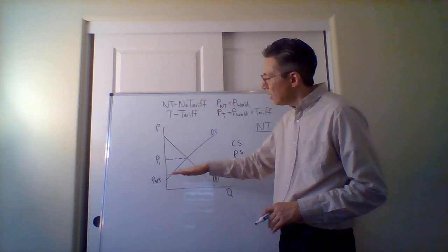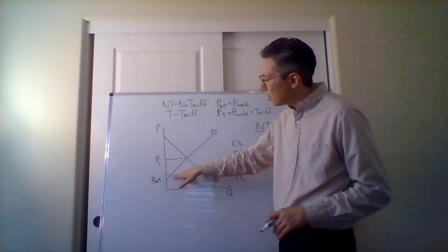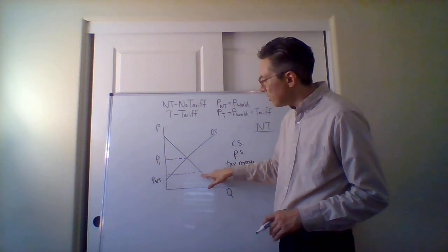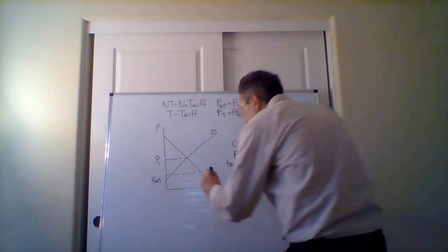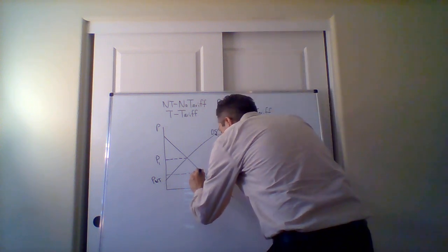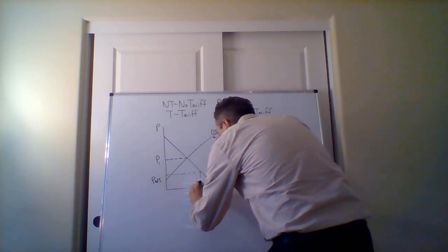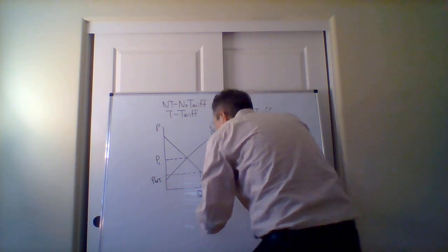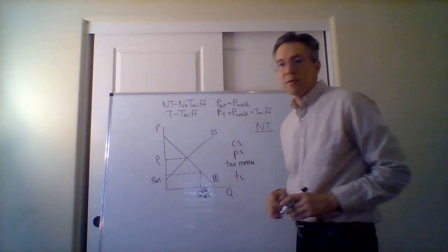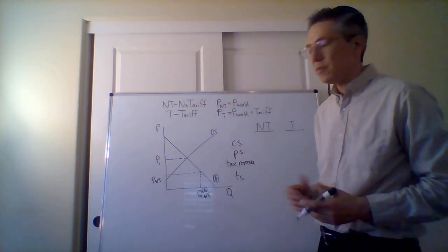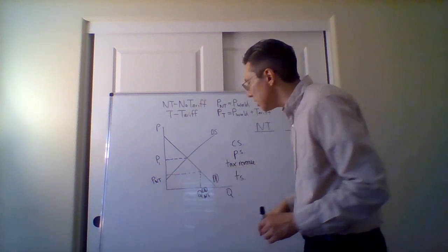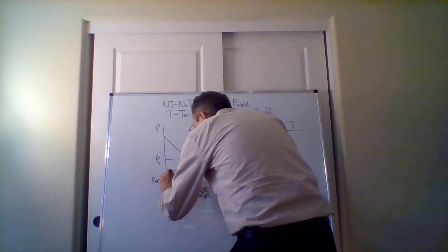Remember how to do that — you just look at where this price hits the demand, and that will give you the domestic demand at that price. So that's the quantity domestically demanded when there's no tariff. In terms of domestic supply, at this price, you find where it hits the domestic supply curve.